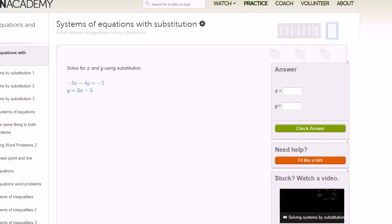So that it's less likely that we get shown up by talking birds in the future, we've set up an exercise for solving systems of equations with substitution. This is the first problem: negative 3x minus 4y equals negative 2, and y equals 2x minus 5.